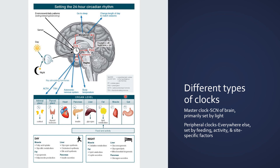The master clock secretes things like adrenocorticotropin releasing hormone and thyroid stimulating hormone, regulates the autonomic nervous system, and regulates body temperature — all coordinating peripheral clocks. However, the master clock probably only has a minor influence on these other organ systems. The peripheral clocks within those organ systems — regulated by feeding, activity, and other factors — are going to have a bigger effect on their function. We want the master clock and peripheral clocks to be synchronized so each organ functions well and coordinates with others. For example, the pancreas, liver, fat, muscle, and gut all regulate blood glucose and need to be in sync.